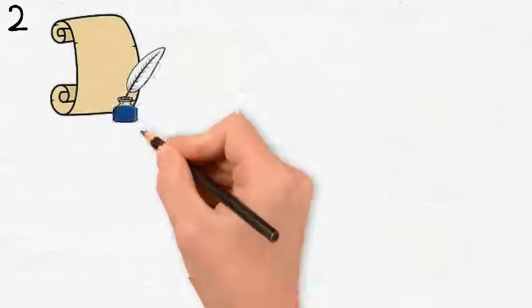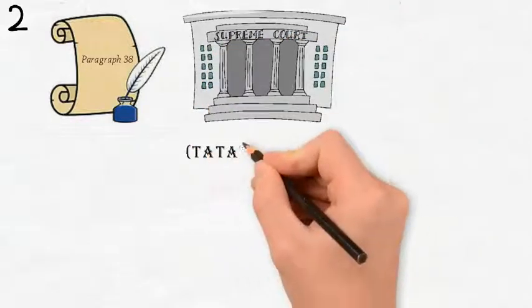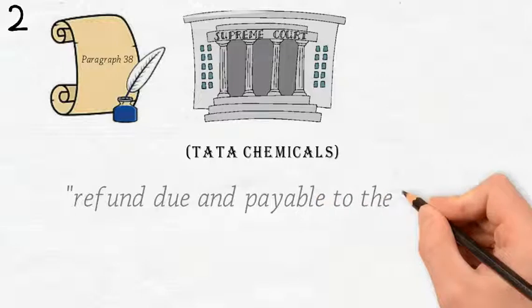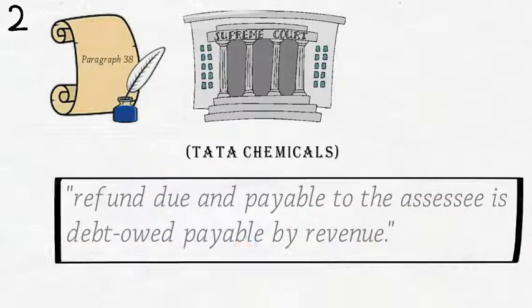the statement found in paragraph 38 of the decision by Supreme Court in the case of Tata Chemicals, that refund due and payable to the assessee is debt owed, payable by the revenue, is actually a perfect statement of law.